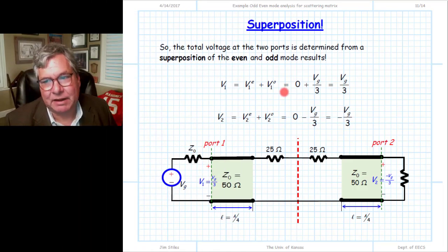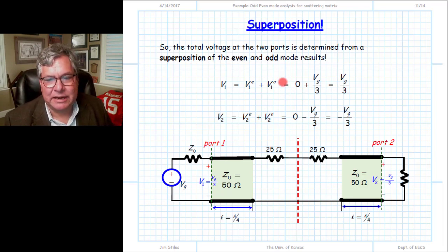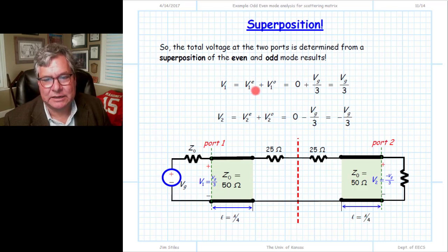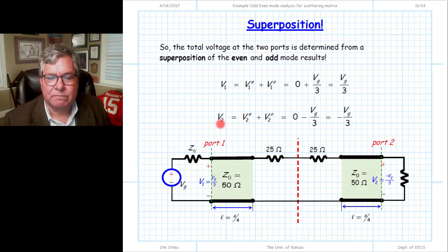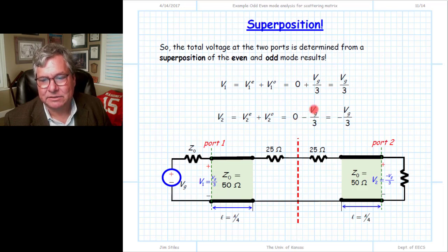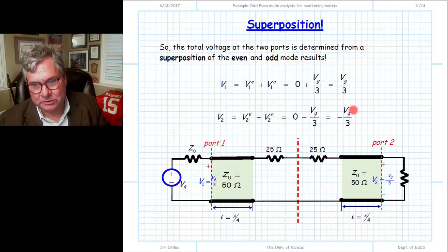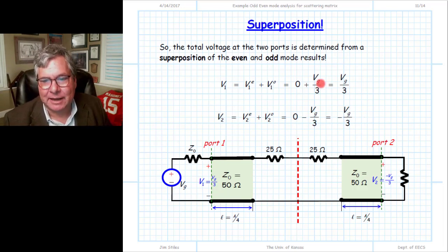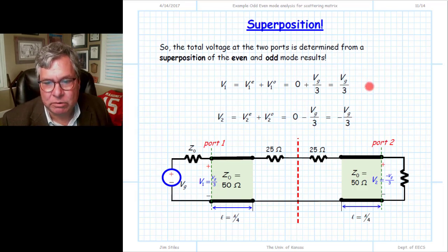We find the port voltages by adding the even mode and odd mode solutions. At port one, v1 equals the even mode plus odd mode voltage: zero plus vg/3 equals vg/3. At port two, the odd mode voltage is the opposite of port one's, so v2 equals zero minus vg/3 equals -vg/3. The voltages are equal but opposite because the even mode voltages were both zero.